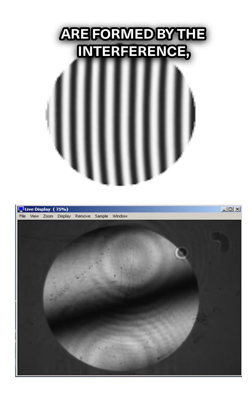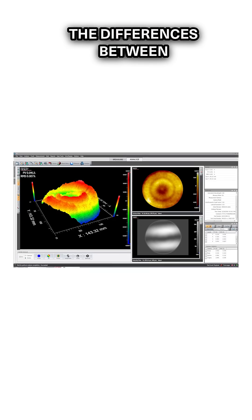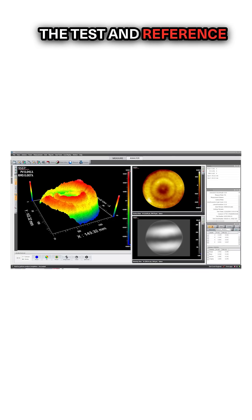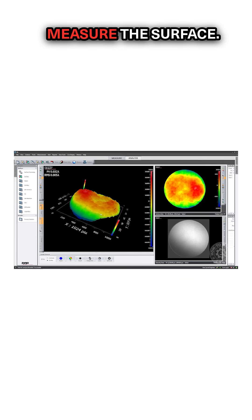These fringe patterns are formed by the interference, and their shape and spacing are directly related to the differences between the test and reference surfaces. The software analyzes these fringes to accurately measure the surface.